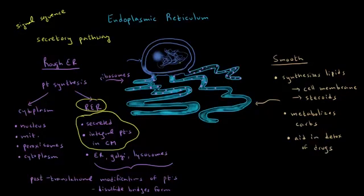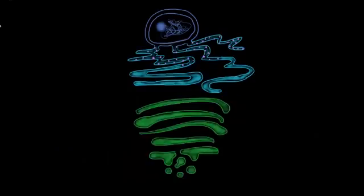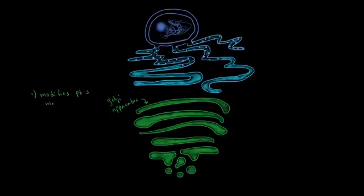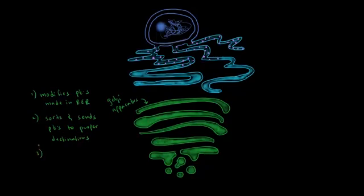In order to understand the secretory pathway, we need to talk about another organelle: the Golgi apparatus. The Golgi apparatus is an organelle found near the endoplasmic reticulum, and it's basically a group of sacs that are stacked together. The Golgi apparatus: number one, modifies proteins that are made in the rough endoplasmic reticulum; number two, sorts and sends proteins to their proper destinations; and number three, synthesizes certain molecules that need to be secreted from the cell.